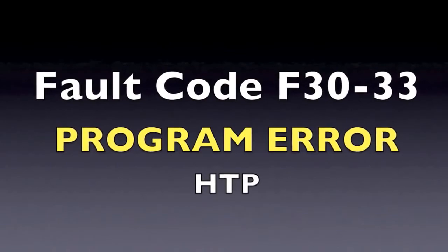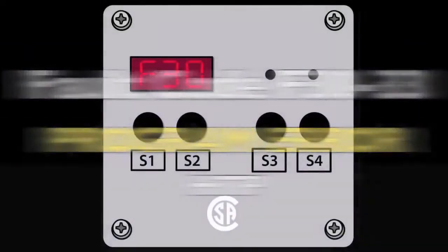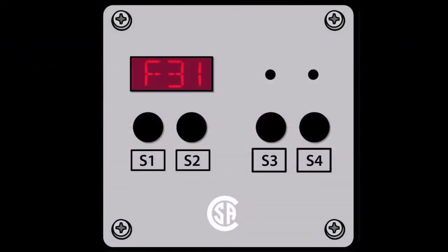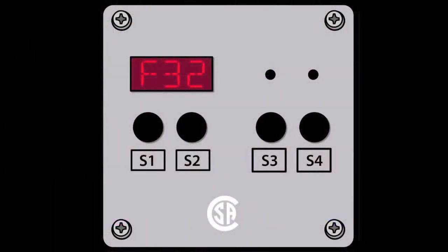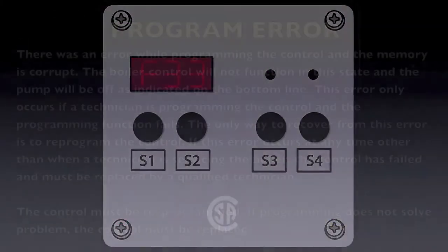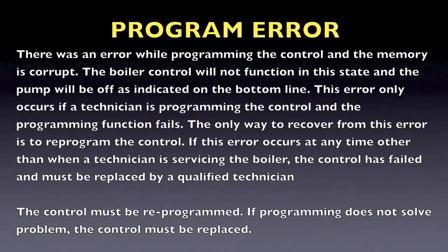If you are getting one of the following codes, an F30, F31, F32, or F33 code in the display, this indicates that there was an error while programming the controller and the memory is corrupt.